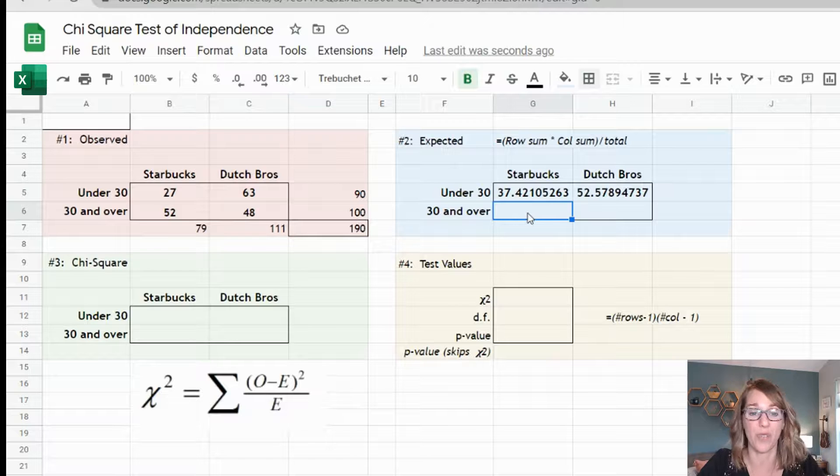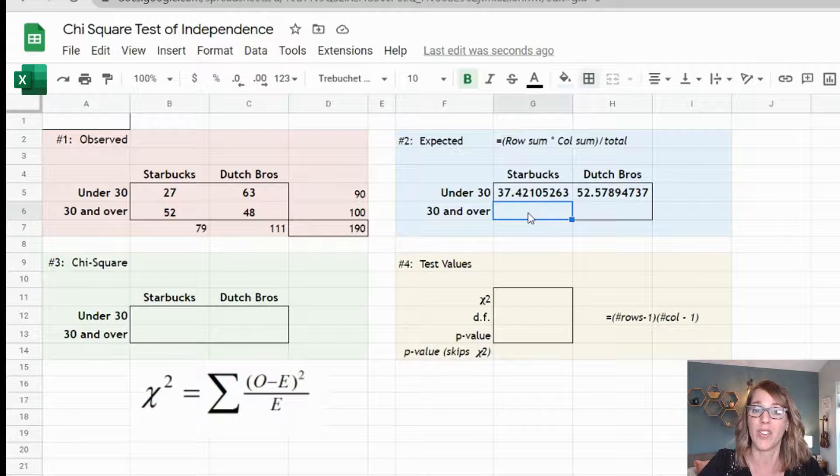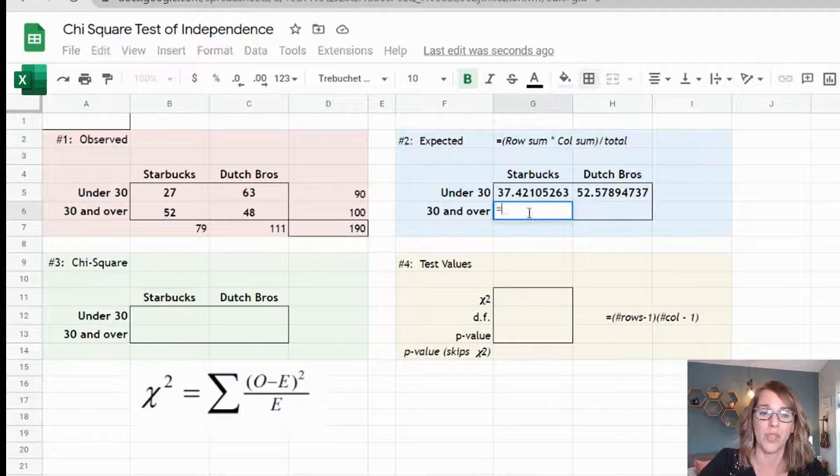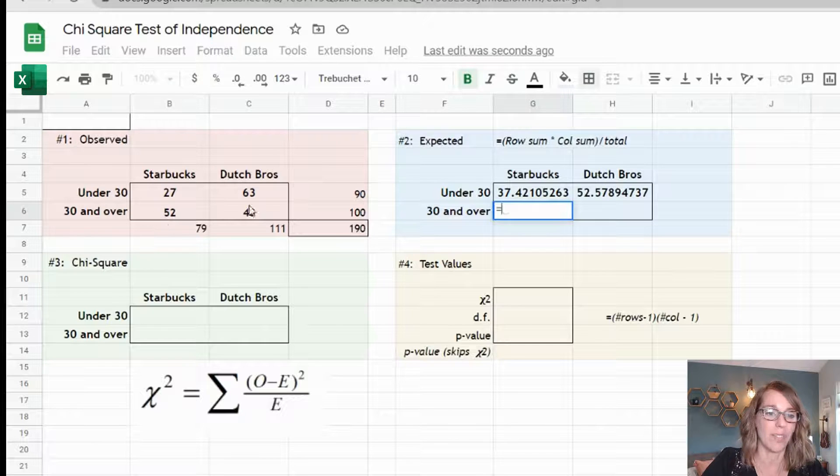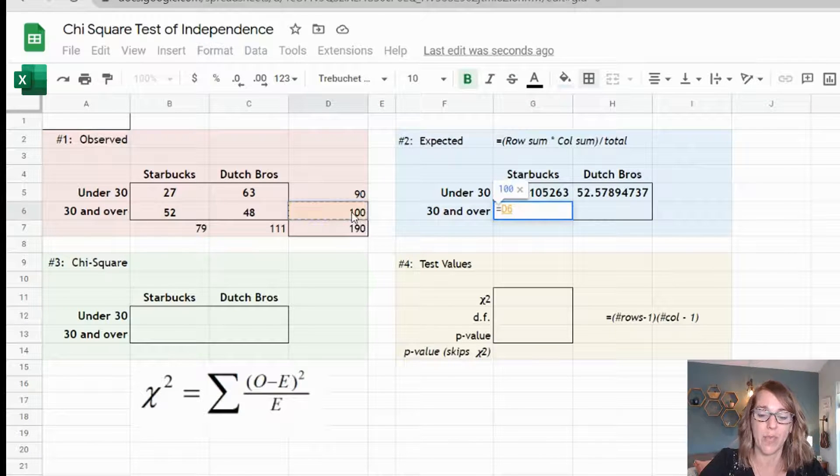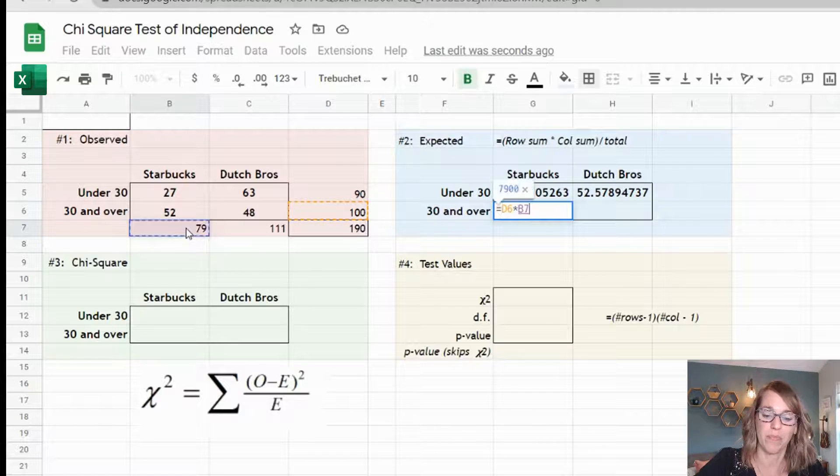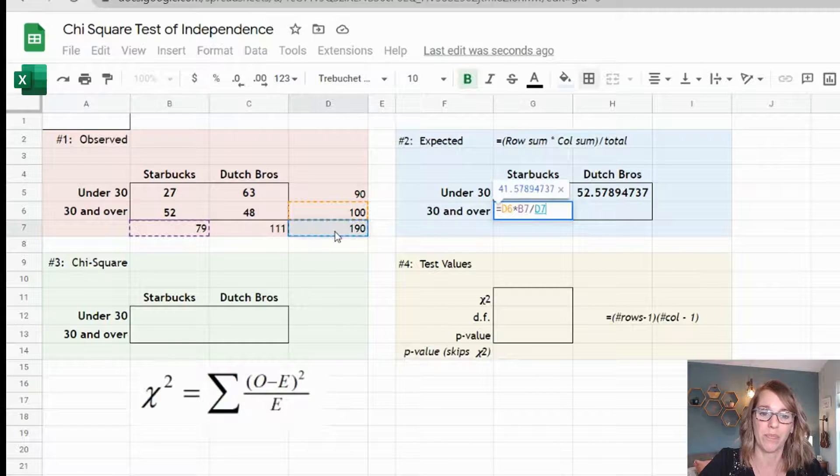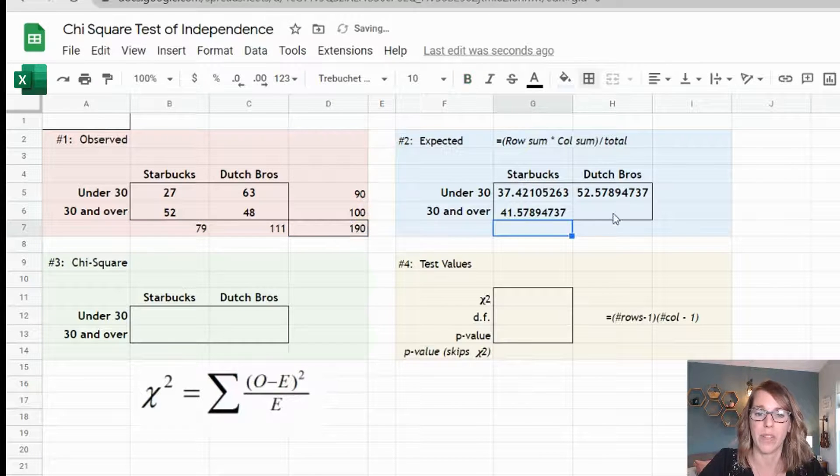Now let's do the next row. So now I'm at Starbucks 30 and over. So equals Starbucks 30 and over, so that one times my column divided by my total and then I'll do the same in the very last one.